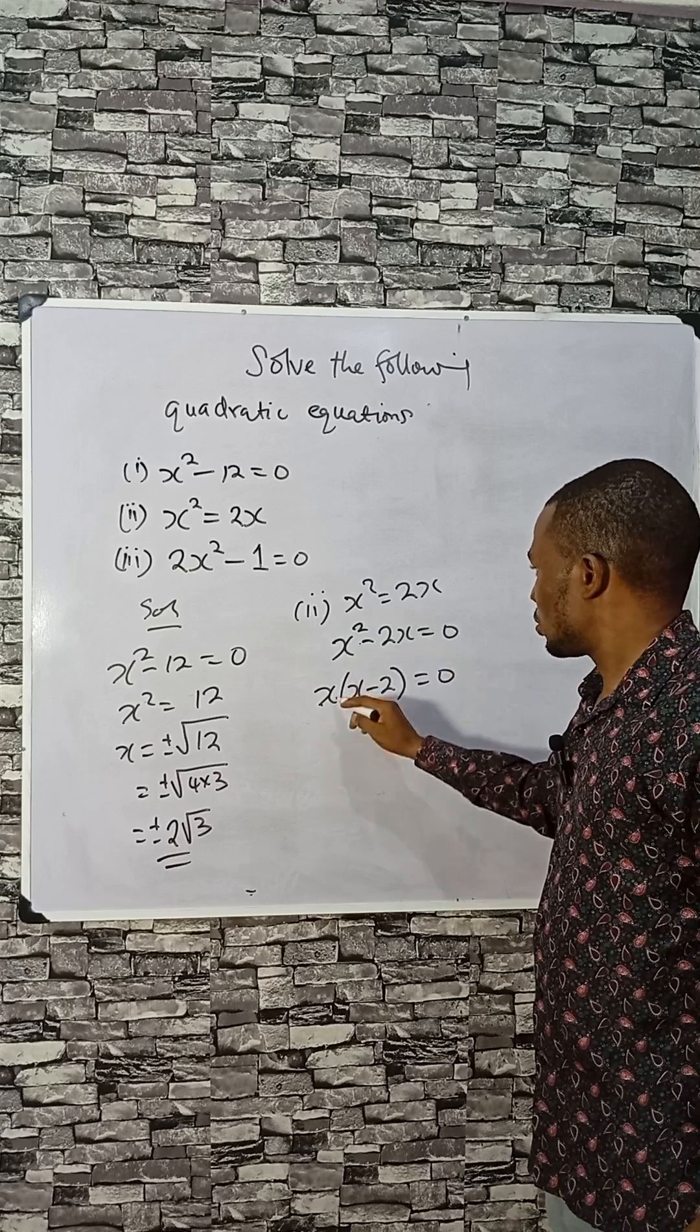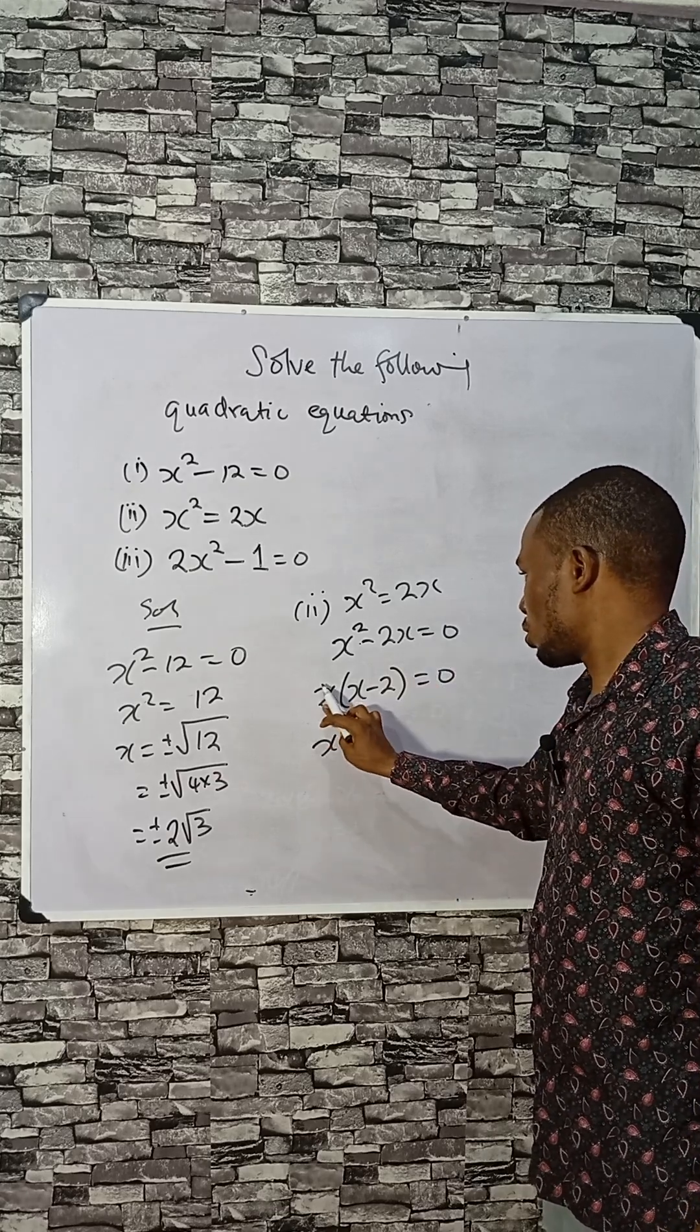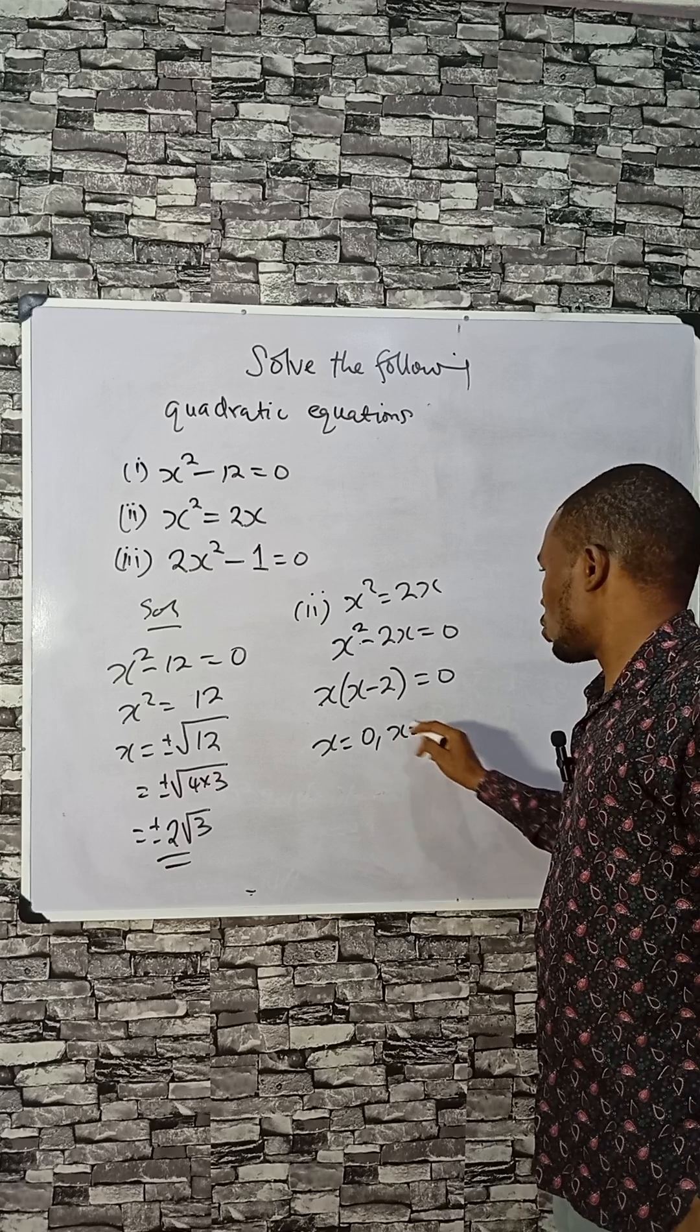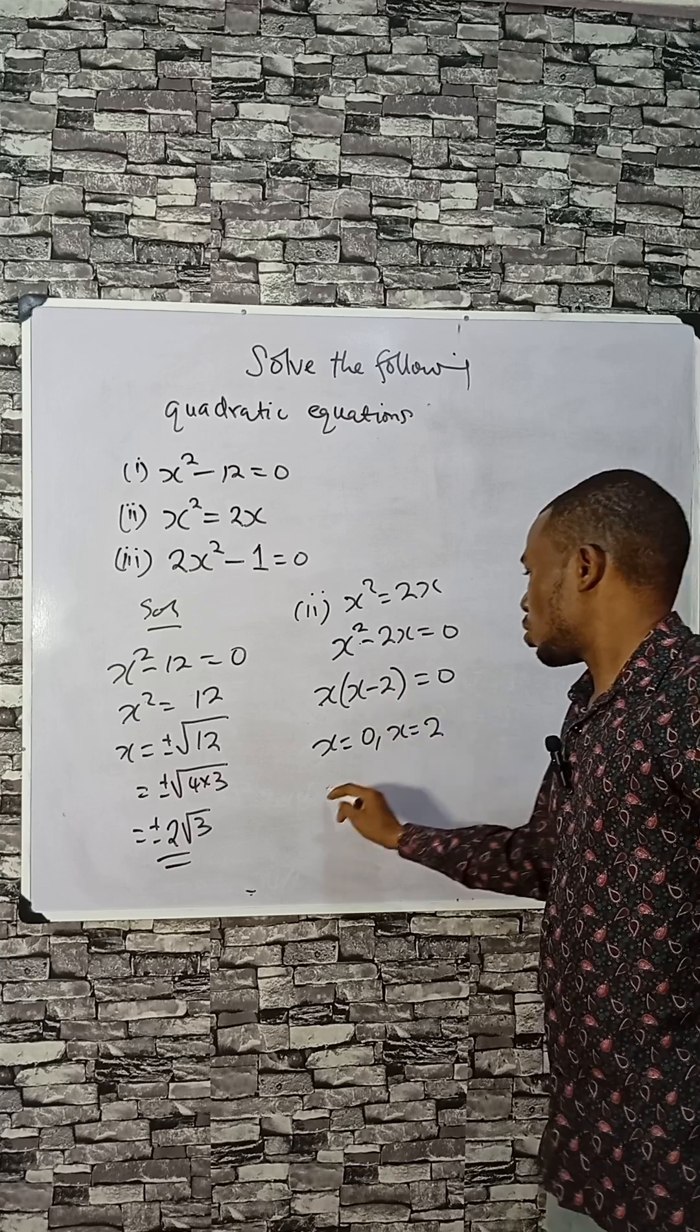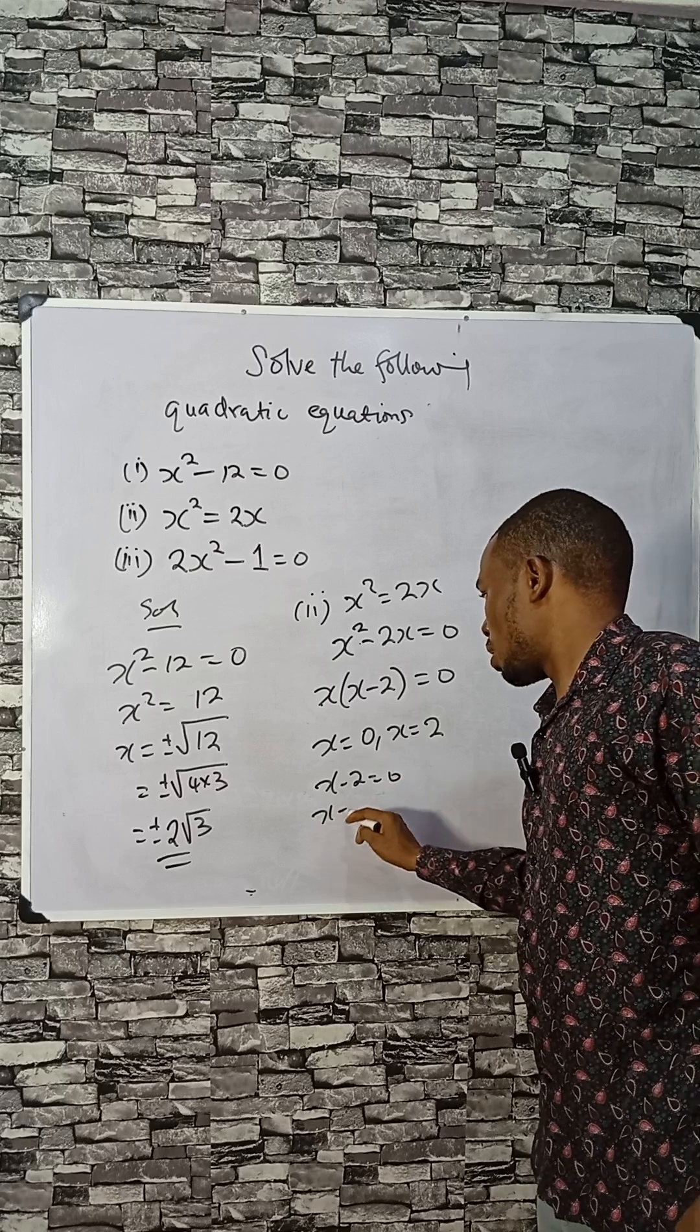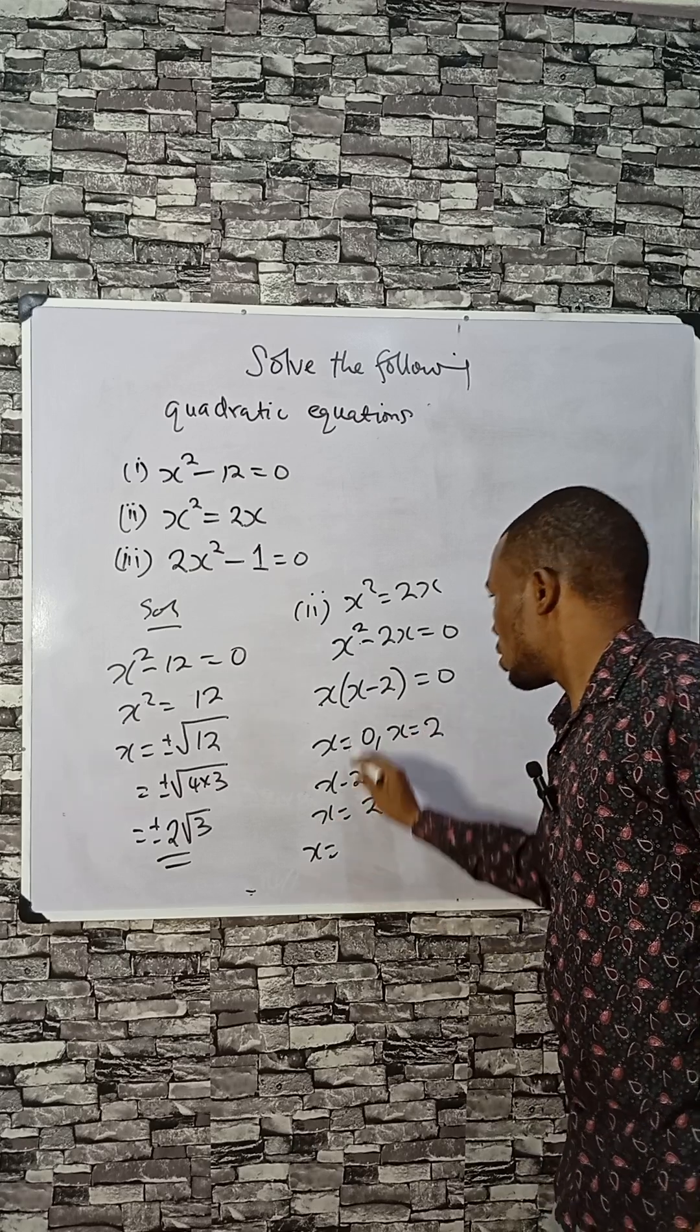Therefore, x equals 0 is the first solution here. And x equals 2 because x - 2 equals 0, therefore x equals 2. So you can have x equal to 0...